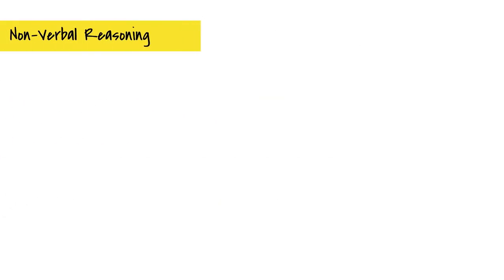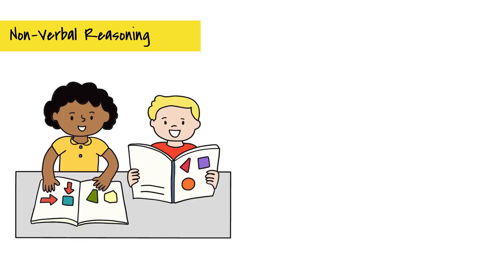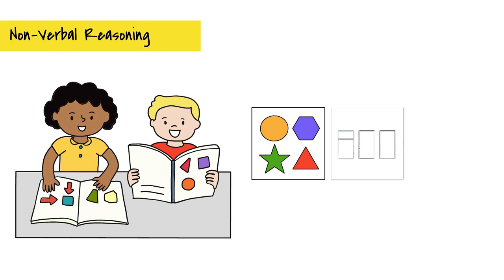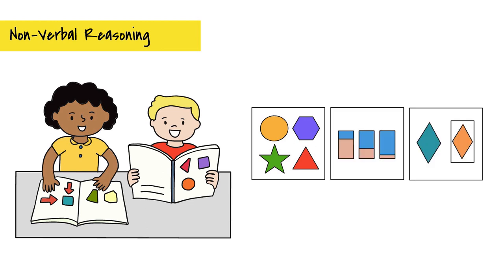Nonverbal reasoning involves the ability to understand and analyze visual information such as identifying relationships, similarities, and differences between shapes and patterns, recognizing visual sequences and relationships between objects.